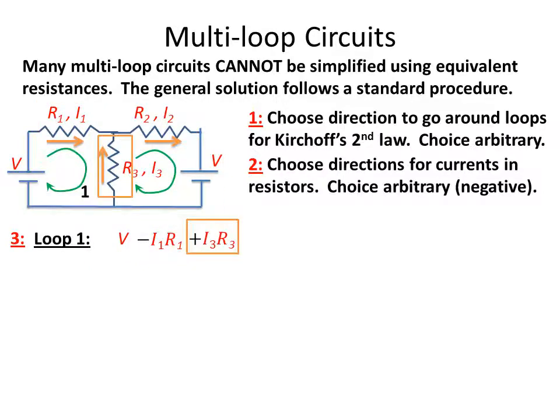We also have a current across R3. The green arrow is going in the opposite direction of the current flow, so it's plus I3, R3, and that whole thing is equal to 0. So that's loop 1.